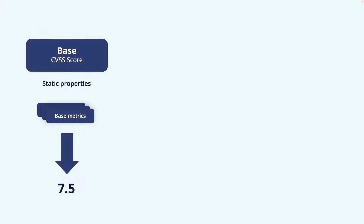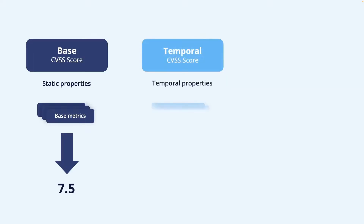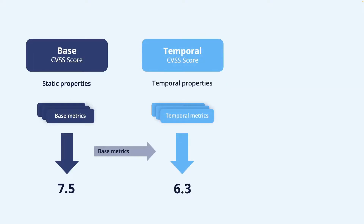The base score takes a set of base metrics and produces the base CVSS score. Another score is the temporal CVSS score. This score builds on the base score but adds metrics that will likely change over time — so-called temporal metrics.